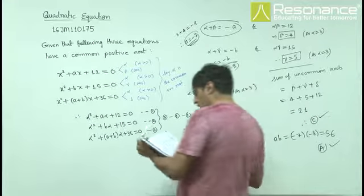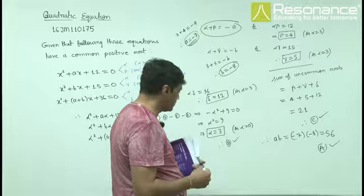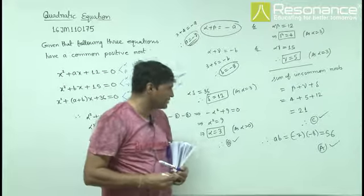For option d, if we add them, we get -15, not +15. So this question has 3 correct answers: a, b, and c.